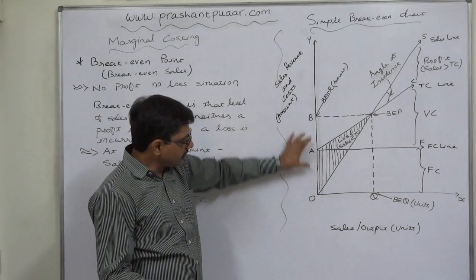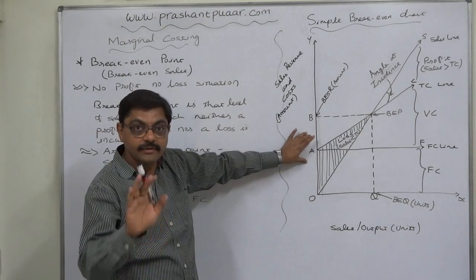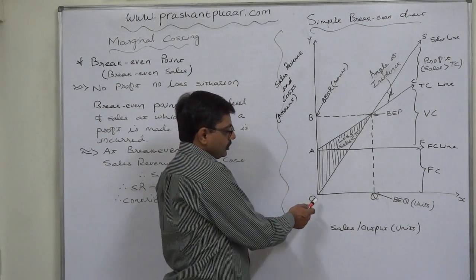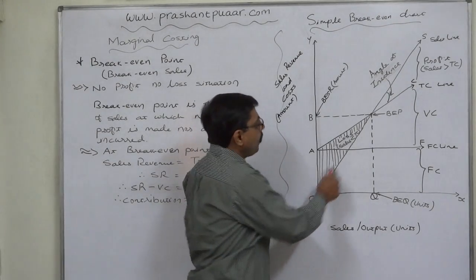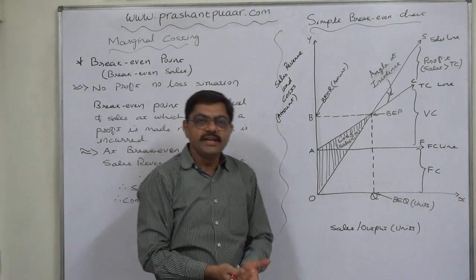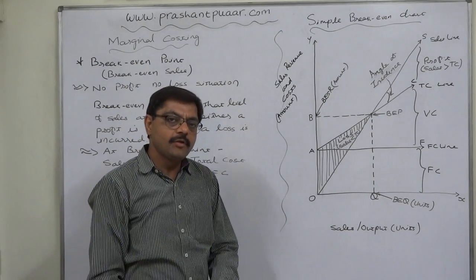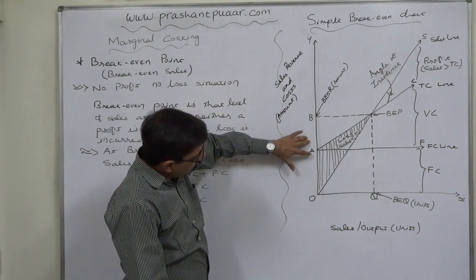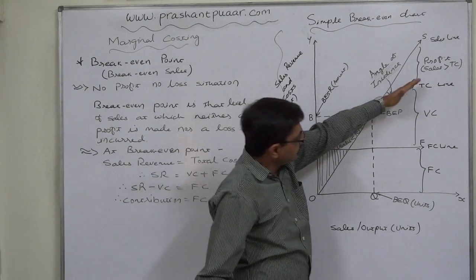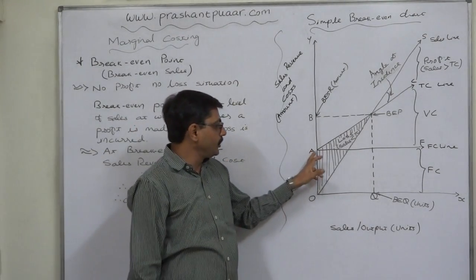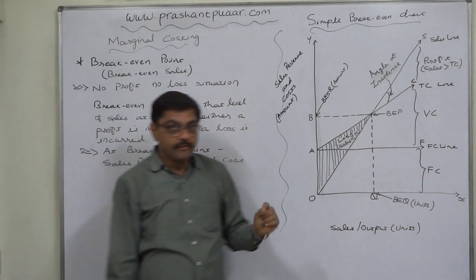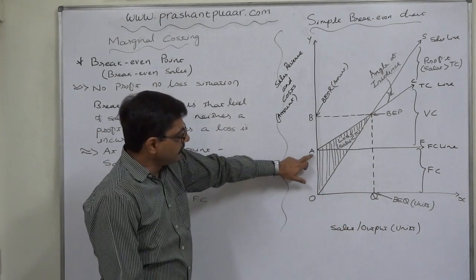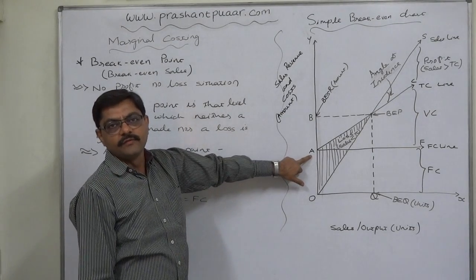The fixed cost remains constant at zero level of production — we have to incur fixed cost even if we do not produce a single unit. Then draw the sales line OS, which starts from zero origin, because at zero level of production no unit is manufactured or sold and no revenue is generated. From the origin of the fixed cost, draw the total cost line, because the starting point of total cost is always the starting point of fixed cost. Total cost can never be zero; fixed cost plus zero variable cost equals total cost equivalent to fixed cost — so the total cost line always starts from point A.